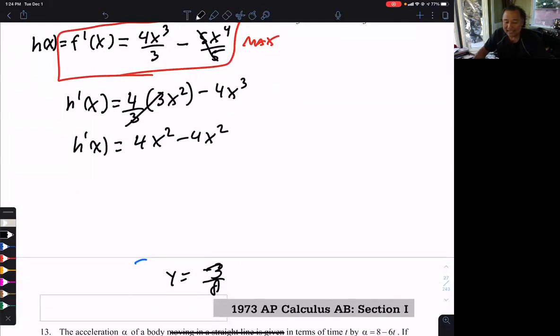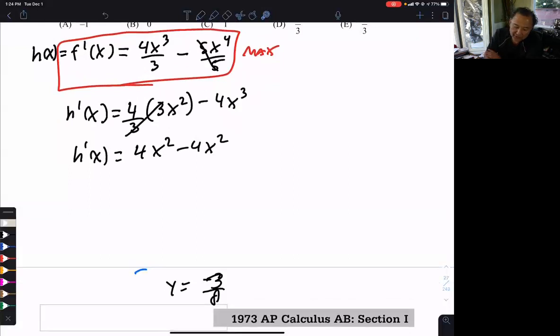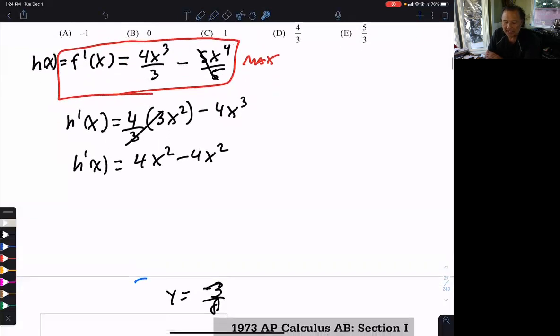I'm trying to maximize h, which is the derivative of f. Okay, so don't get confused with what you're trying to maximize. So when does this equal 0?